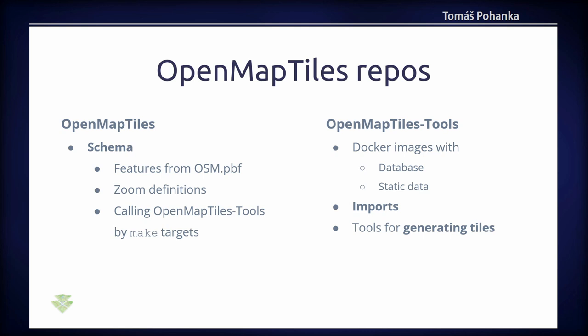OpenMapTiles has two main repositories. The first is OpenMapTiles itself, which contains the schema — the schema defines what features from OpenStreetMap will be imported to the database and on which zoom level. From the main repository, you call through make targets the OpenMapTiles tools. The tools repository contains Docker images like the database, static data, import tools, and tools for generating tiles.